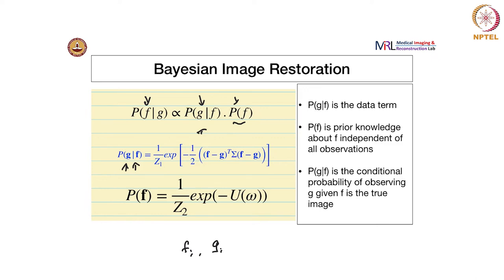The conditional probability P(G|F) — the data term — is characterized by some noise. You are saying that G is a corrupted version of F and also making an assumption about the type of noise, which is zero mean Gaussian noise.